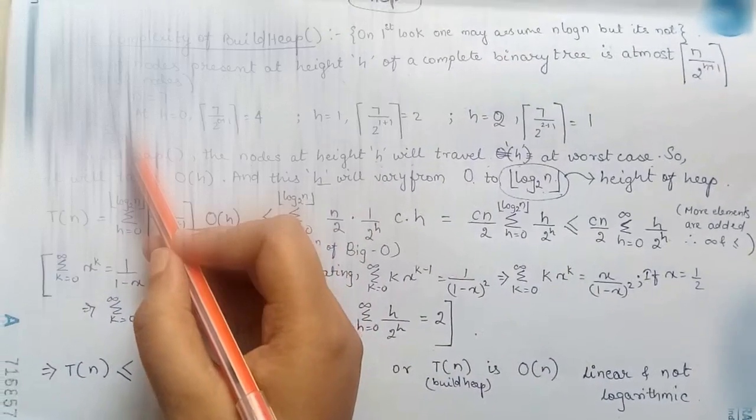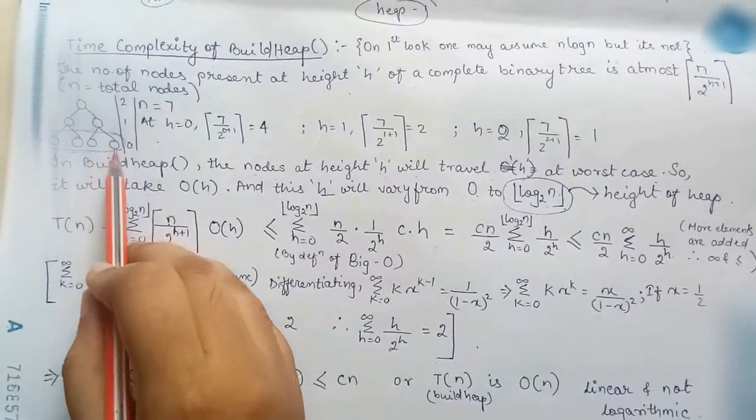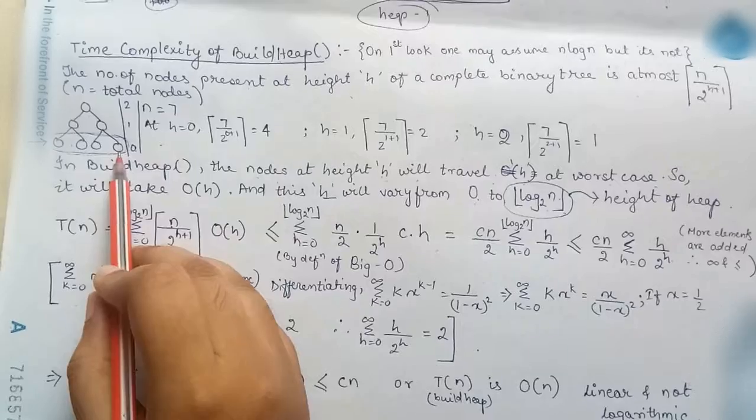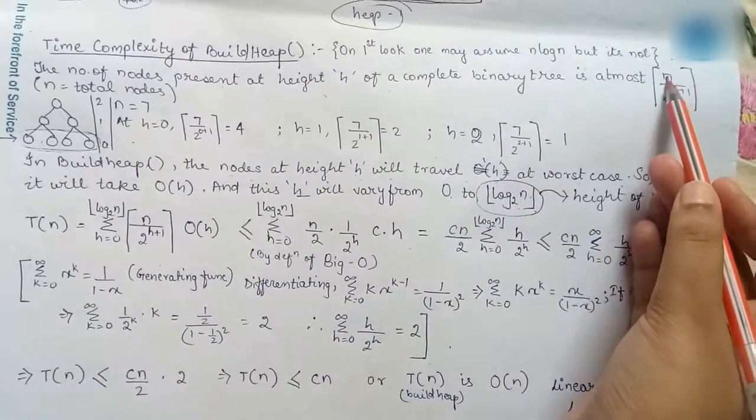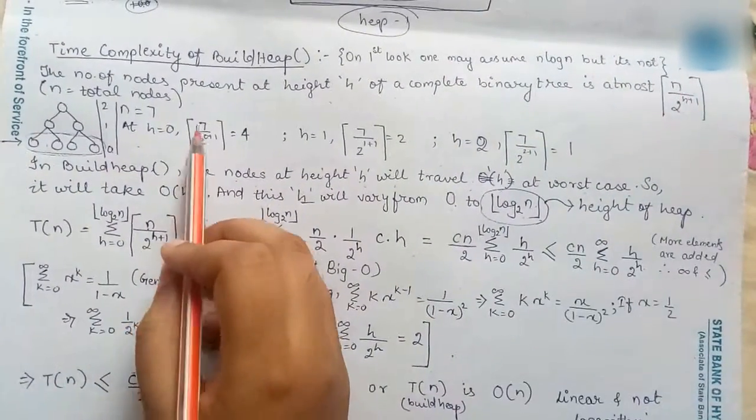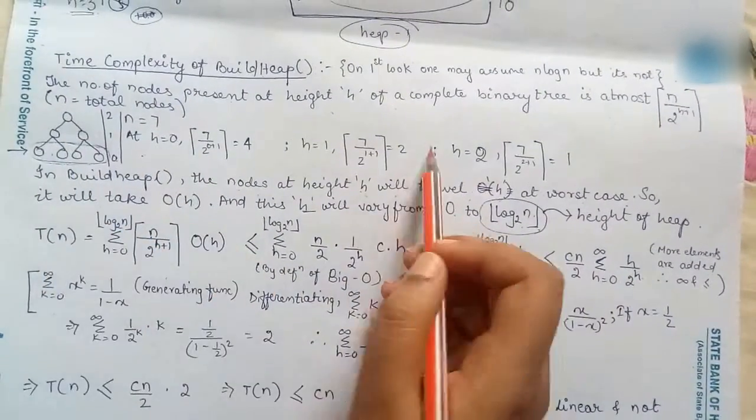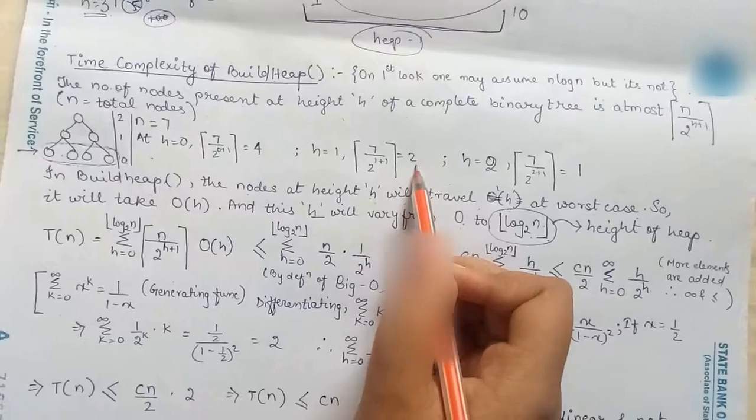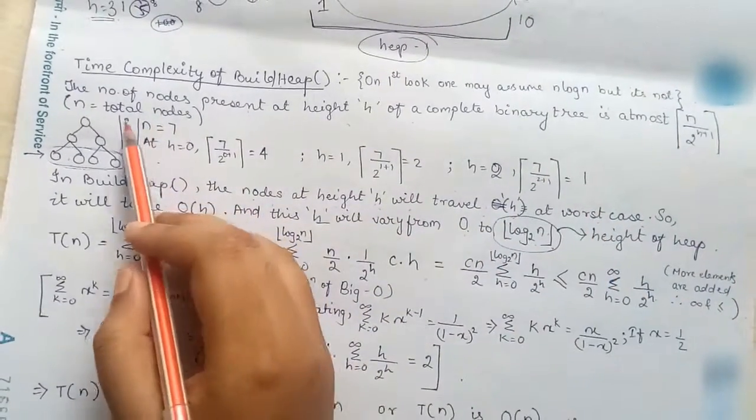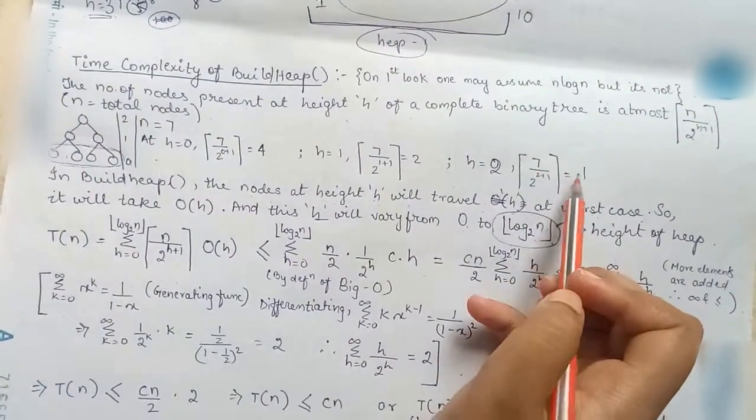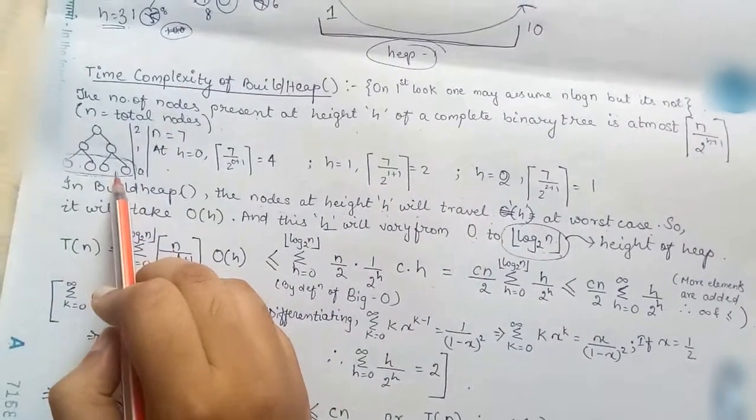So at height h equal to 0 we can have at max 4 nodes. So by putting this formula n is number of nodes h is height we get it as 4. So similarly at this height we will have at max 2 and at the top we will have at max 1 if our n is 7.